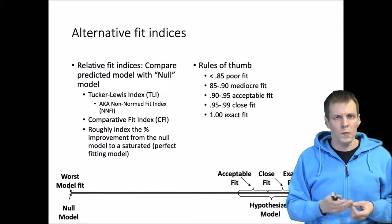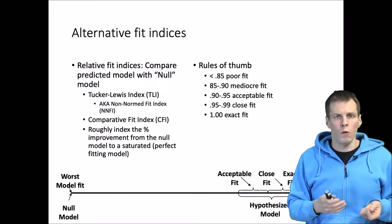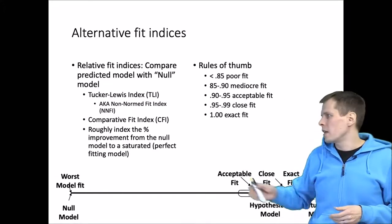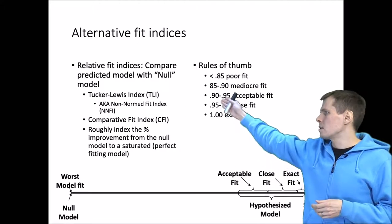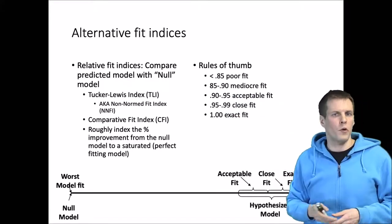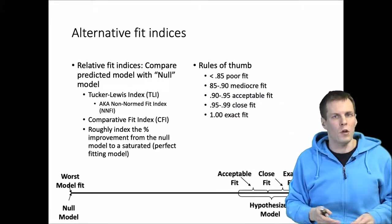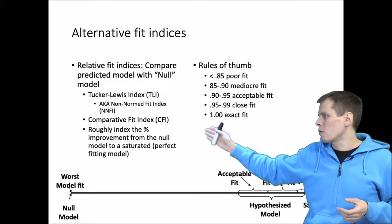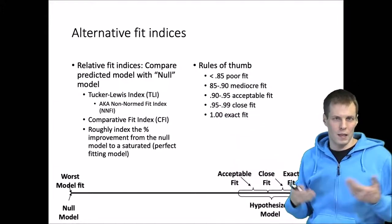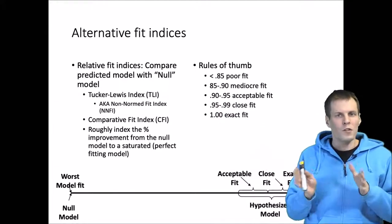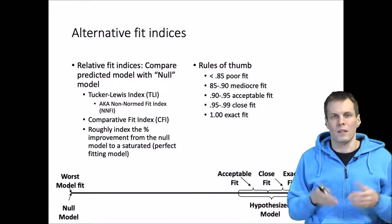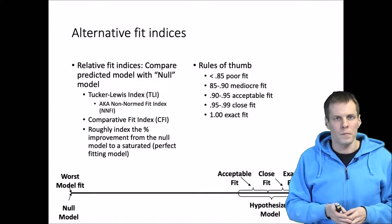The original rule of thumb for CFI was 0.95, but you can find rules of thumb saying 0.85 is okay or 0.90 is already acceptable fit — even though the original rule of thumb was 0.95, below which you have problems.